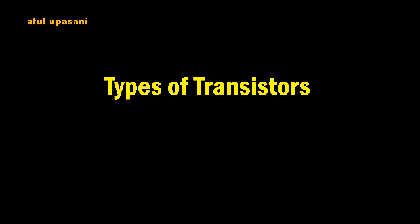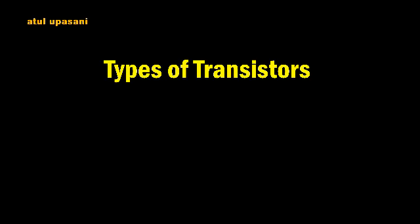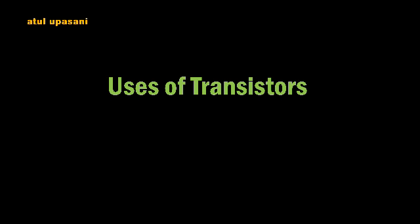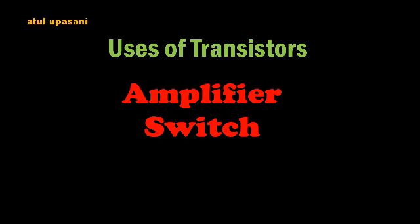There are two main types of transistor: the bipolar junction transistor and the unipolar junction transistor, also called the field effect transistor. The transistor can be used as an amplifier or as a switch.